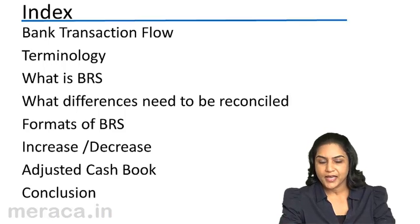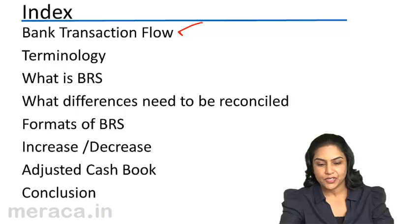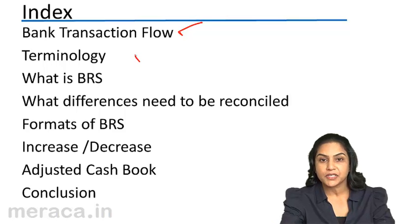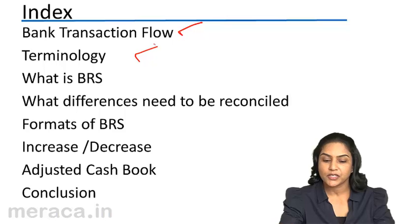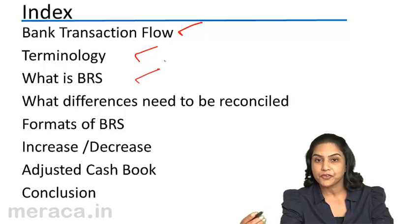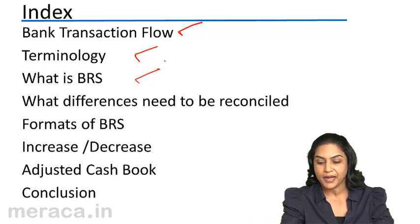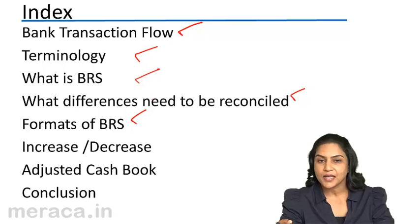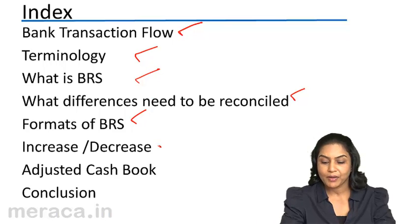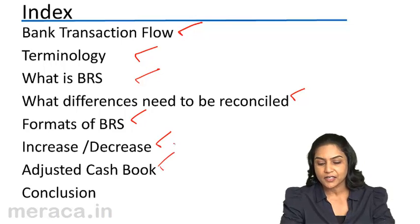The flow of our discussion would be as below. We would first discuss what a bank is, what is a bank transaction, and the flow of the bank transaction. We will then discuss certain common terms used while preparing a bank reconciliation statement. Next, what is a bank reconciliation statement, what are the differences that need to be reconciled, and why do we need a bank reconciliation statement. Then we look at the format of a BRS and summarize the rules of increase and decrease — when some items need to be added and subtracted while preparing a bank reconciliation statement. Finally, we look at the adjusted cash book and in conclusion, we have an overview and a summary of the entire discussion.